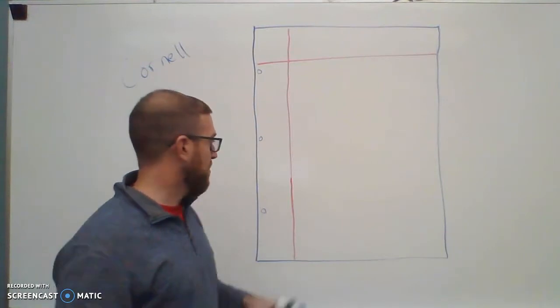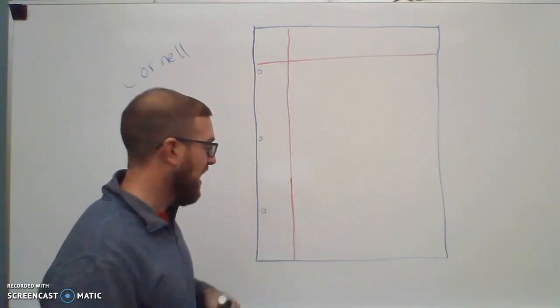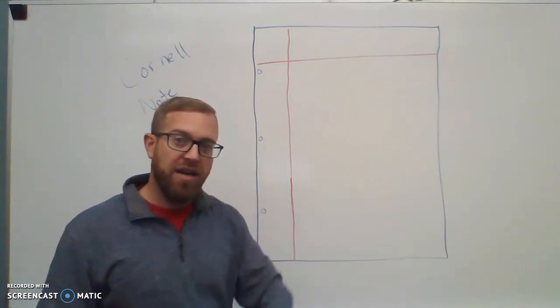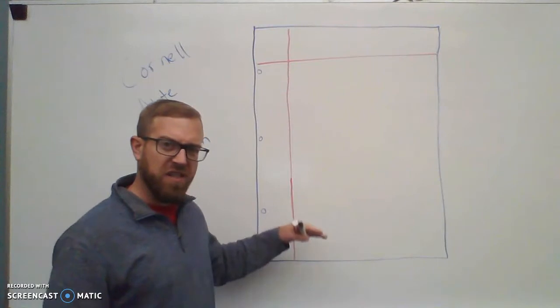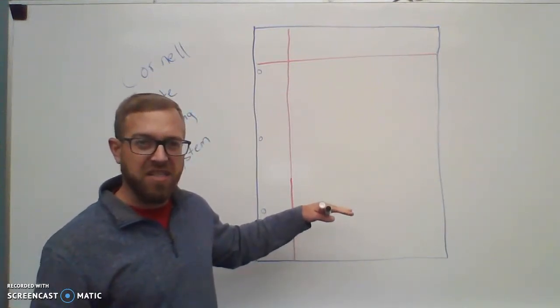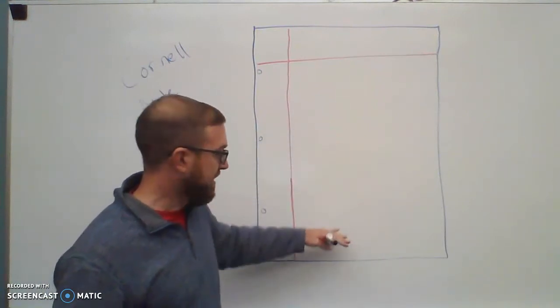Since we already have a line down the left-hand side of the margin, I'm going to draw another line across the bottom of the paper. If this is a loose-leaf piece of paper, I want to leave maybe about five to six lines.